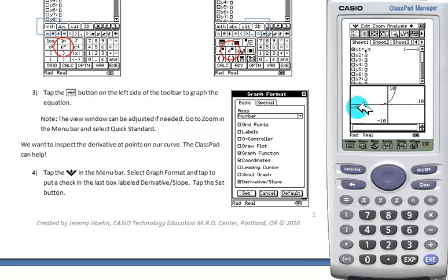Get a graph of e to the x. If your window doesn't look like this, go to zoom, go to standard, quick standard. And we should get negative 10 to 10 for both x and y values.